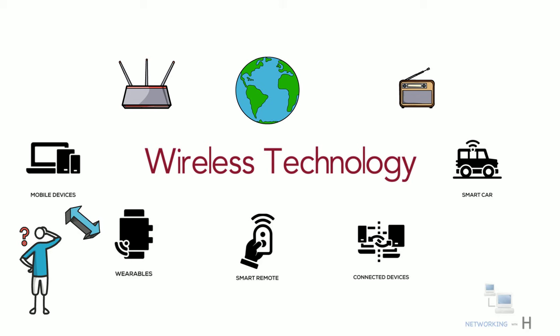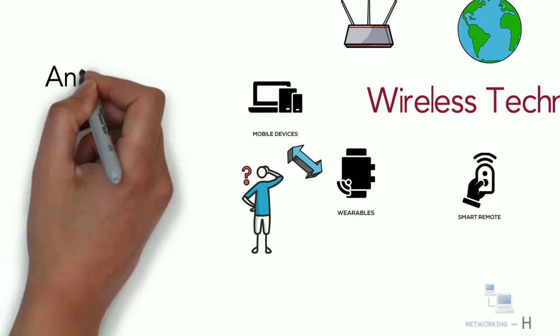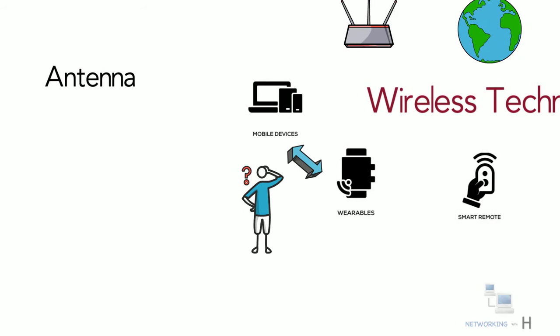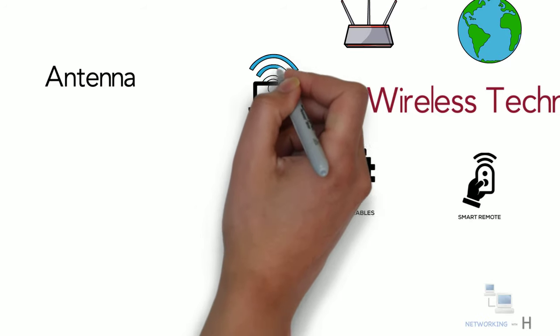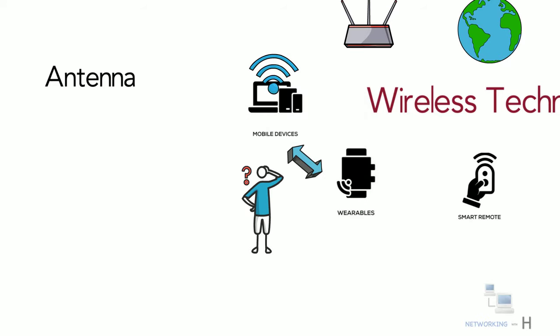The answer is antenna. Every wireless device is equipped with antennas. Antennas are responsible for the transmission and reception of signals on such devices.